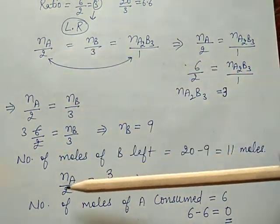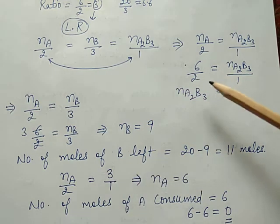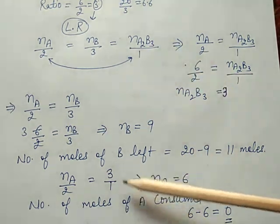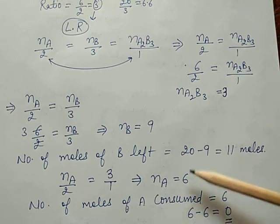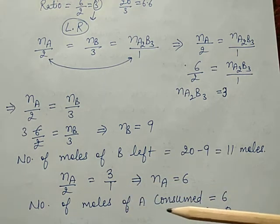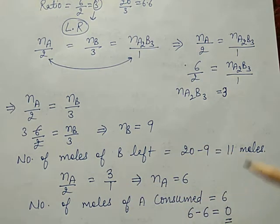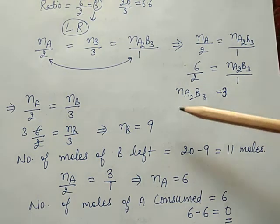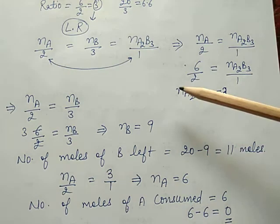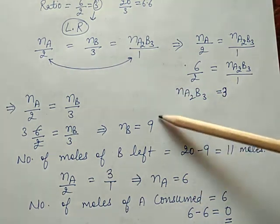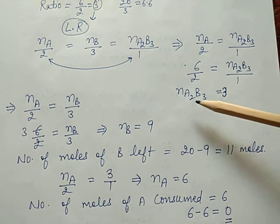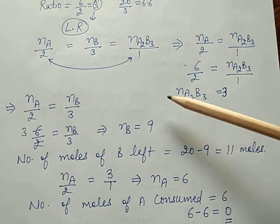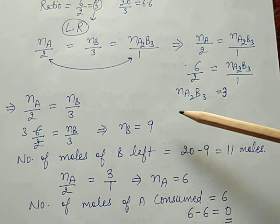Next, N_A divided by 2 equals 3, so N_A equals 6. It means 6 moles of A are consumed. How many moles of A are left? 6 minus 6 equals 0. So we can easily find the number of moles of all components — N_A, N_B, and N_A₂B₃ — and easily determine which is the limiting reagent and which is the excess reagent. Thank you, students.